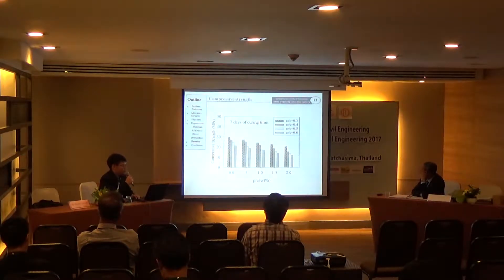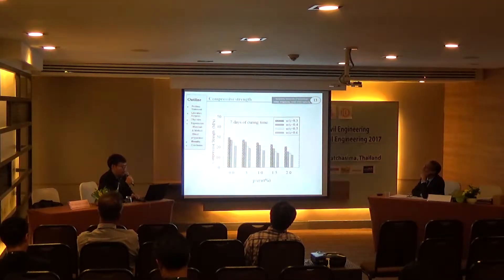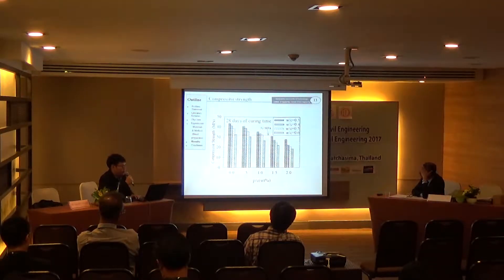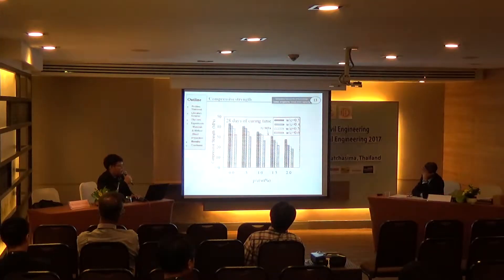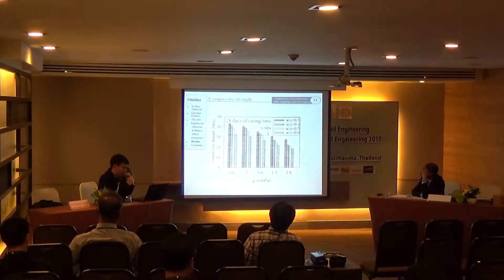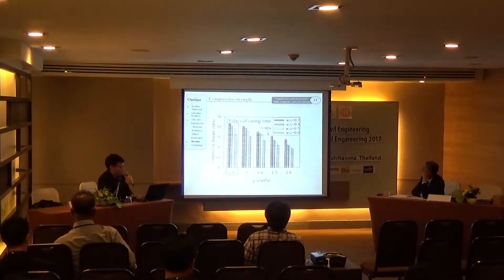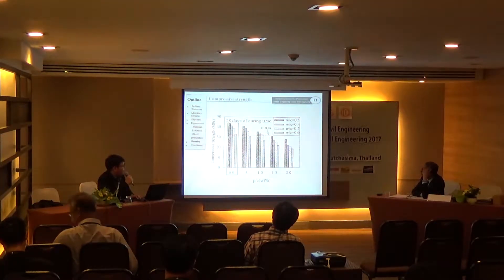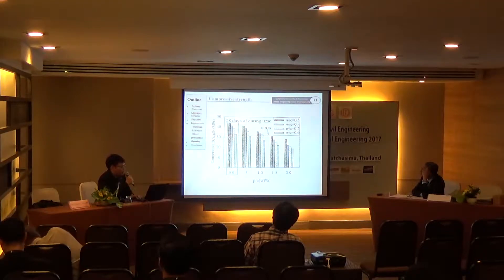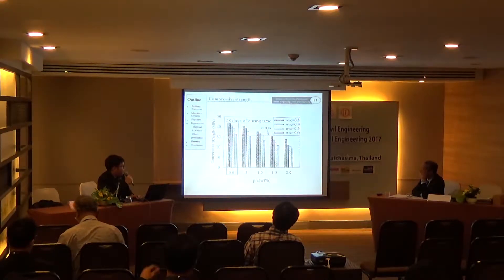The compressive strength of the RCA-PVA concrete increases with increasing curing time. At 28 days of curing time, the maximum compressive strength at each water-to-cement ratio is found at a PVA-to-cement ratio of 0.3 and 0.4, while the minimum compressive strength is found at a PVA-to-cement ratio of 2.